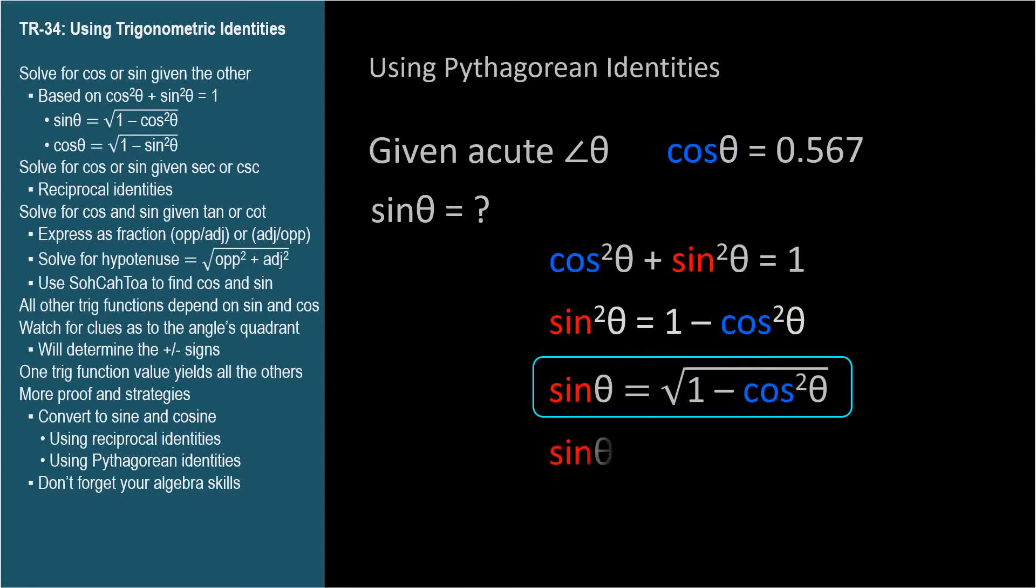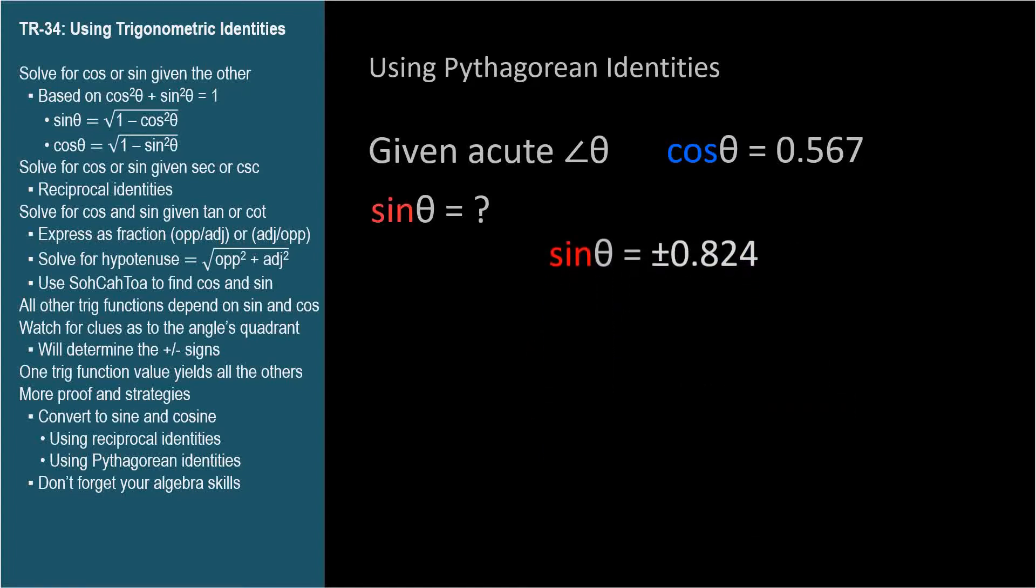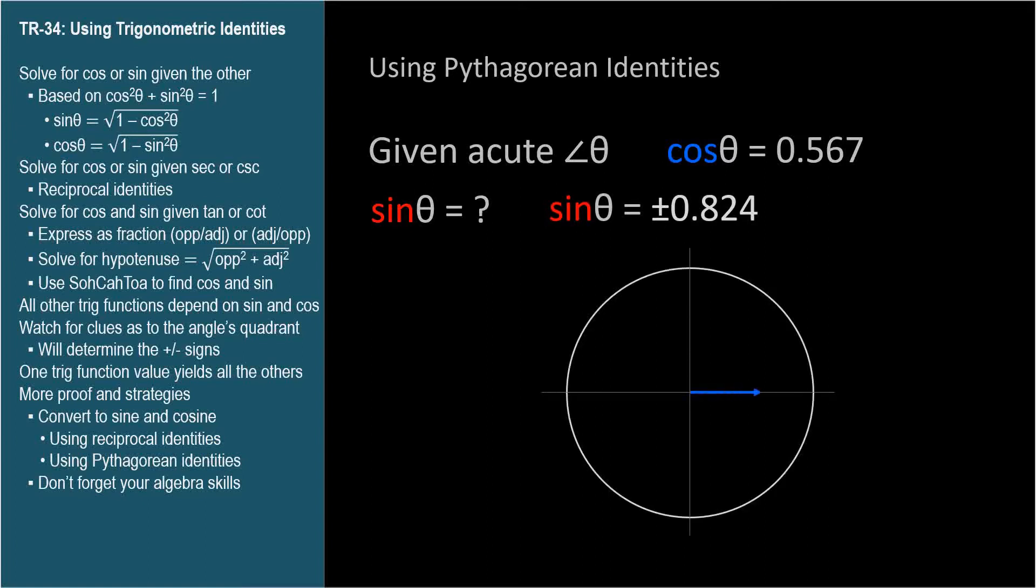So sine theta equals plus or minus 0.824. Hmm, plus or minus. We'll get this a lot when we solve problems with the Pythagorean identities, since we need to take square roots a lot.